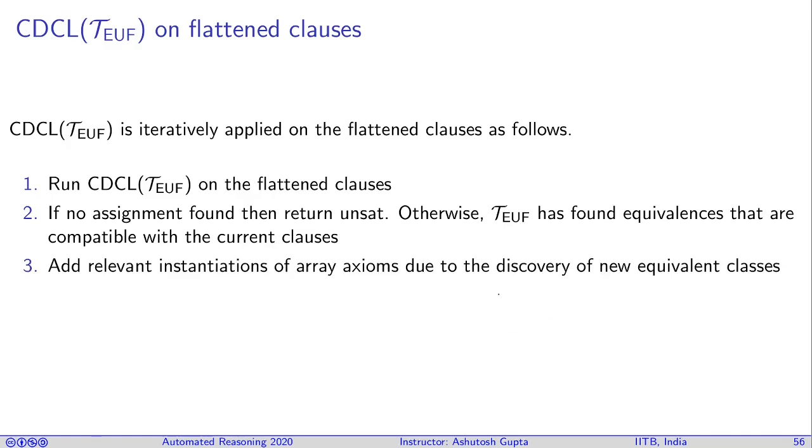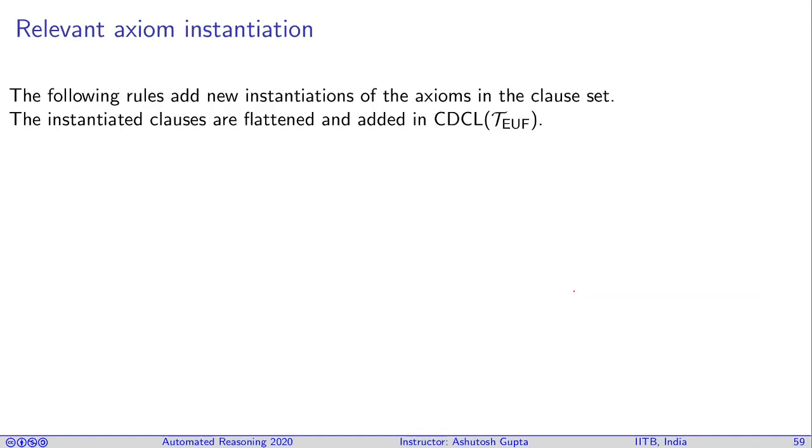Add relevant instantiation of theory axioms due to the discovery of the new equivalence classes. And then we will continue and go back to step one. So what are those relevant axiom instantiations? Here are few I will present and they will somehow be complete. And I'm not going to prove why these are sufficient. They are somewhat obvious from the axiom systems.